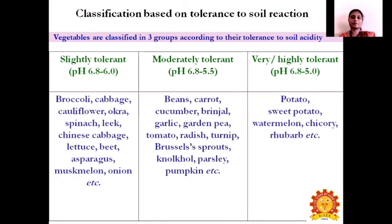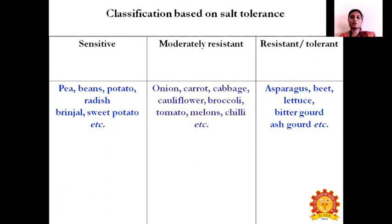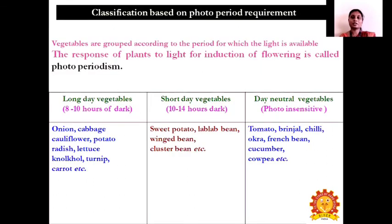Classification based on salt tolerance groups vegetables into three categories: sensitive, moderately resistant, and resistant or tolerant. Crops sensitive to salt include peas, beans, potato, radish, and green crops. Crops moderately resistant to salt include onion, carrot, cabbage, cauliflower, broccoli, tomato, melons, and chili. Crops resistant or tolerant to salt include asparagus, beetroot, lettuce, bitter gourd, and ash gourd.